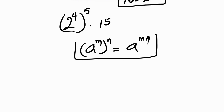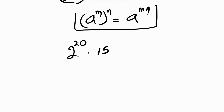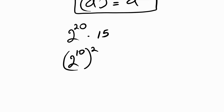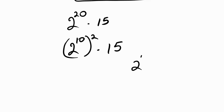Applying that rule, 2 raised to power 4, raised to power 5, becomes 2 raised to power 20, times 15. We can also rewrite 2²⁰ as (2¹⁰) squared times 15. Now 2 raised to the power of 10 is 2 multiplied together 10 times, which equals 1024.